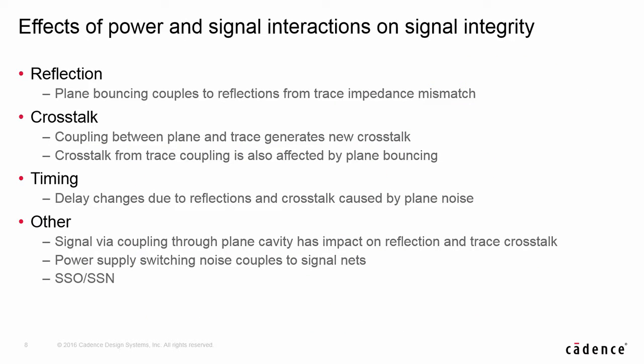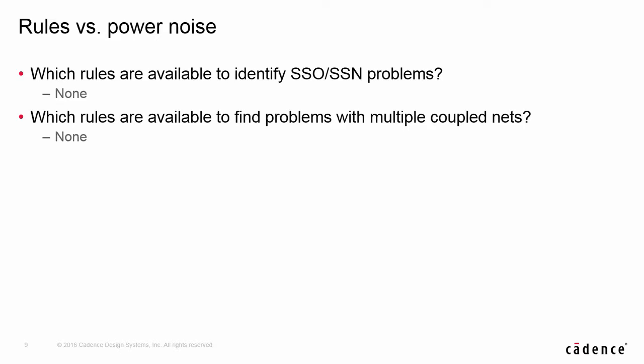Now the question is: how do we make the sign-off flow valid again by including identification of power noise-introduced problems? First, we need to understand that power noise couples to signals and will change all classic SI problems such as reflection, crosstalk, and timing. SSN and power supply switching are typical examples. Is there any rule available to check the power-induced problems in a design? The answer is no, because the plane noise impact on signals is difficult to model and may not be easy to get any simplified formula to derive rules for practical use.